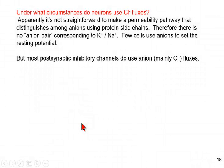What about other monovalent ions? Let's remember, seawater also has a lot of chloride. Under what circumstances do neurons use chloride fluxes? Actually, nature appears to have had a bit of trouble making a permeability pathway that distinguishes among anions using protein side chains. There's really no anion pair that corresponds to the potassium and sodium pair. As a result, few cells actually do use anions to set the resting potential. But transient violations of that occur because most post-synaptic inhibitory channels do use anion fluxes, and they're primarily chloride. The resting potential, the major job of a cell, is done with sodium-potassium cations rather than anions.